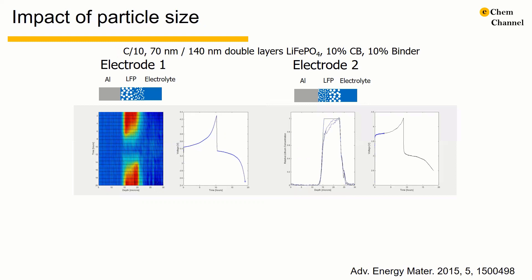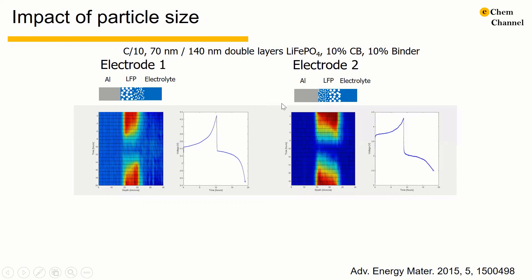For the second situation, the experiment is performed again on Electrode 2. The result shows that the smaller particles close to the current collector lose lithium faster when voltage increases and gain lithium faster when voltage decreases.